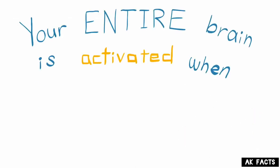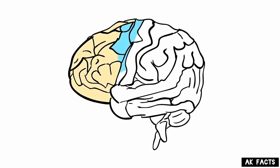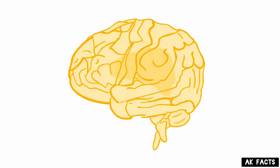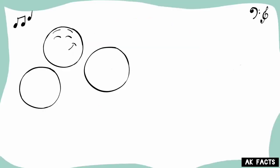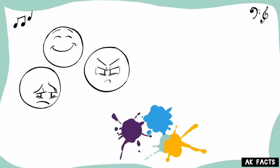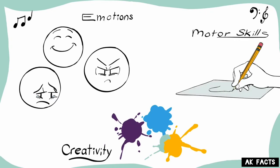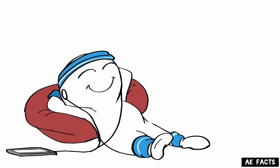Your entire brain is activated when you listen to music. There aren't many activities that make your whole brain light up, but listening to music is definitely one of them. When you listen to music, there's not a single part of your brain that isn't activated. Parts of the brain that are responsible for emotions, creativity, and even motor functions are working while listening to music. So if you're looking for a full brain workout, simply put on your favorite song.